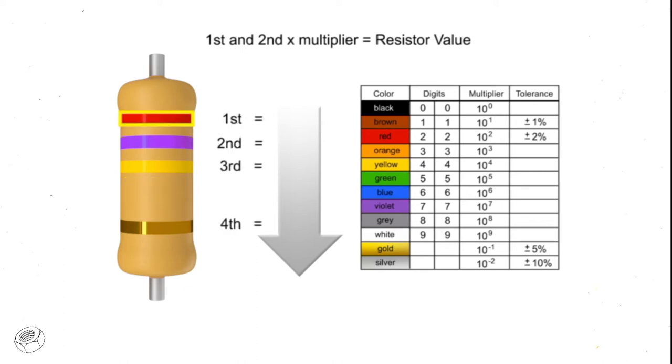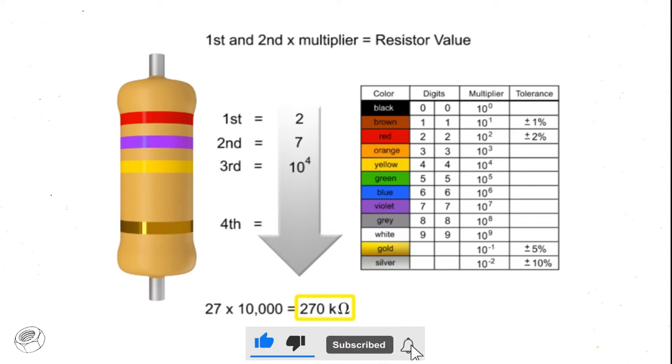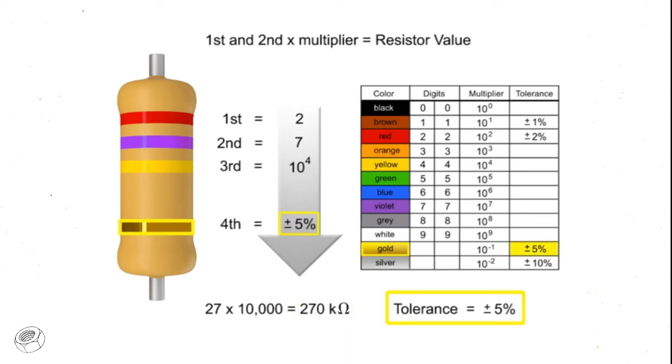The first band is red, so the first digit value is 2. The second band is violet, so digit 2 is 7. The third band is yellow, so we multiply the first two numbers by 10 to the fourth, or 10,000. Thus, the value of this resistor is 270 kilo-ohms with a tolerance of plus or minus 5%.